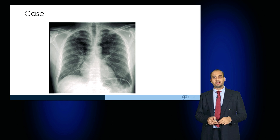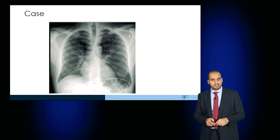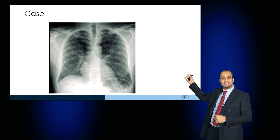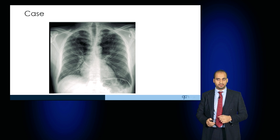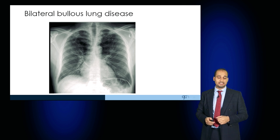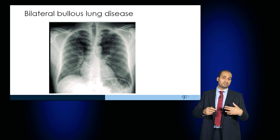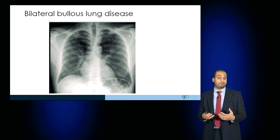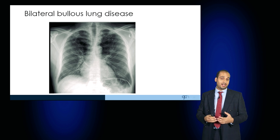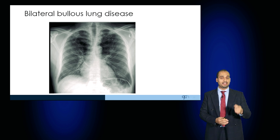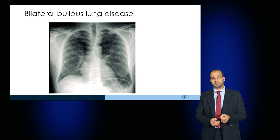Here's another chest radiograph. You can see some large bullae in the left and right apical zones — this is bilateral bullous disease. Patients who have COPD with enlarged bullae may require lung volume reduction surgery or bullectomy, and this can be done through a VATS procedure.